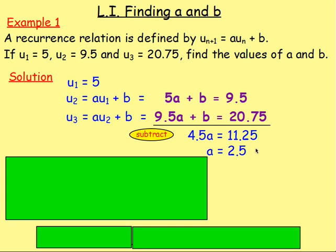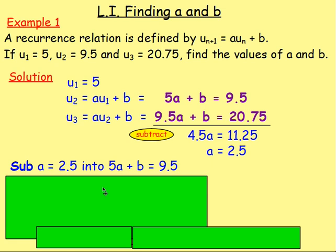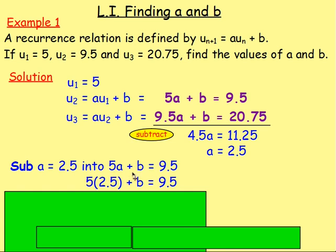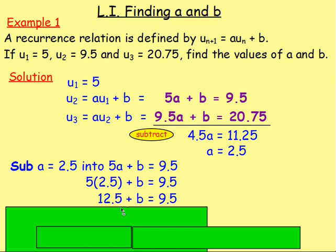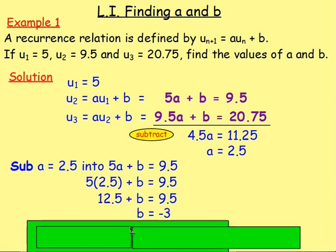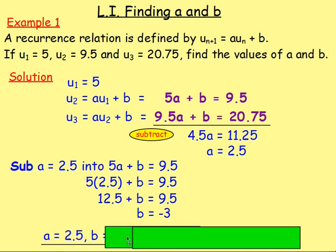Once you know A, sub that value into one of the equations to work out B. I'd probably take the one with smaller numbers, so 5A plus B equals 9.5. Replace A with 2.5: you get 12.5 plus B equals 9.5. Subtract 12.5 from both sides, and B equals negative 3. Therefore, A is 2.5 and B is negative 3.